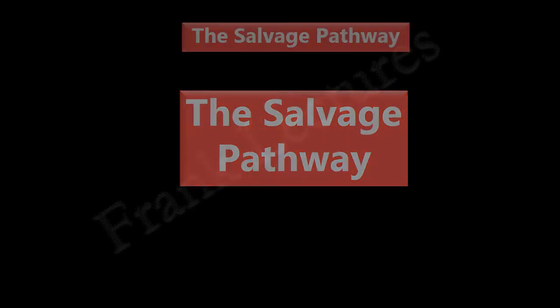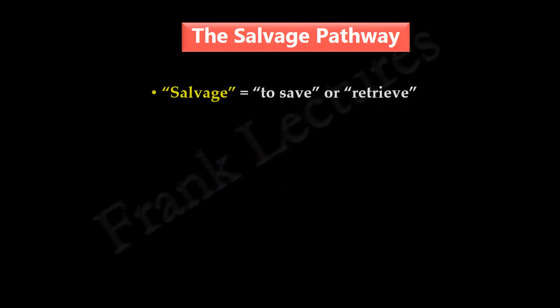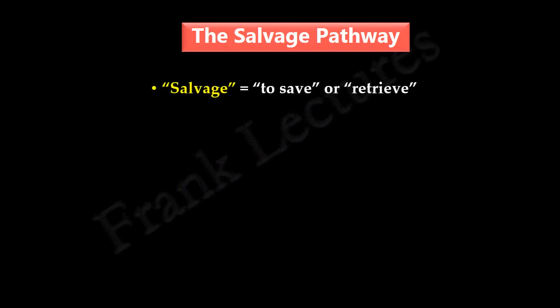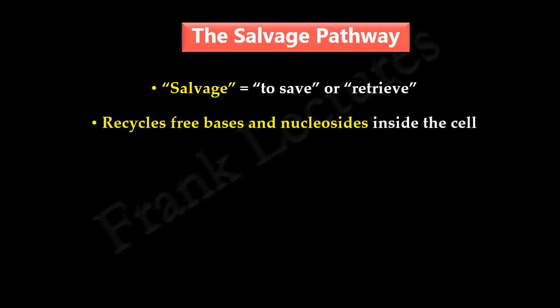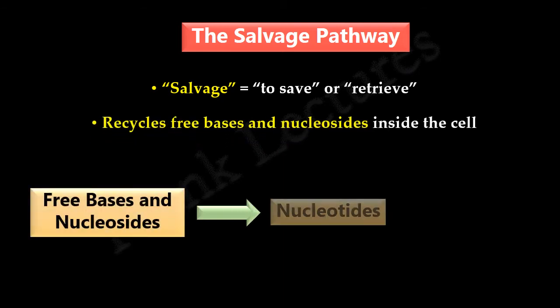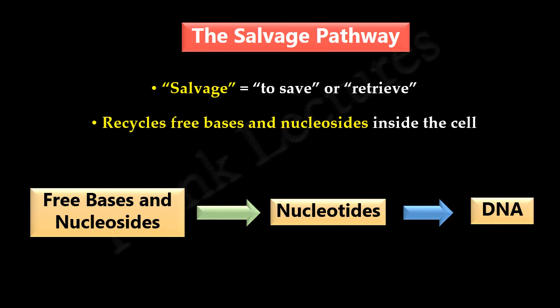Now let's come to the second pathway — the salvage pathway. The term salvage is derived from Latin, which means to save or retrieve. This pathway recycles free bases and nucleosides inside the cell and forms nucleotides. In other words, this pathway recovers preformed bases and forms nucleotides by reconnecting them.